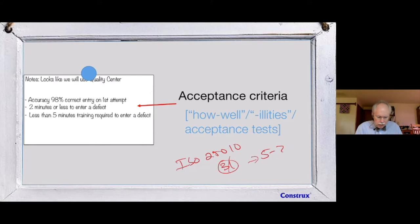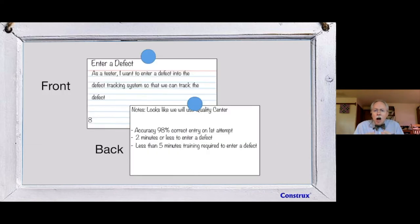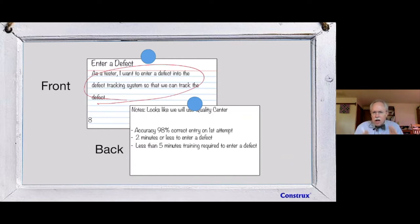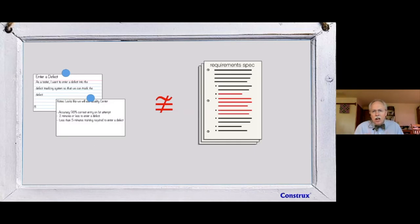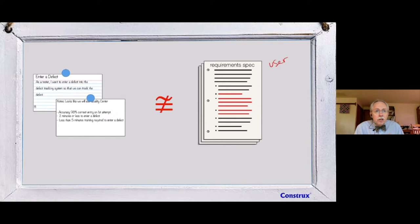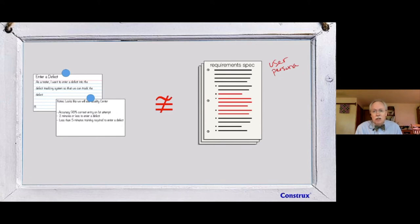That's our card — front and back — and together all this makes up the user story. A lot of people get confused thinking only the description part makes up the user story. But this isn't a specification. A requirement spec has much more: who the users are, their demographics, their skills — captured in personas — and all this context that user stories say nothing about at all.